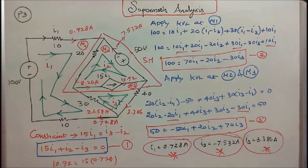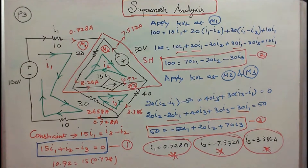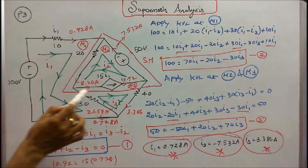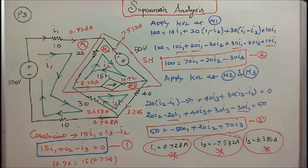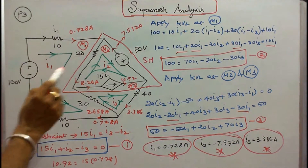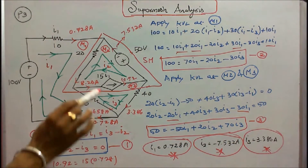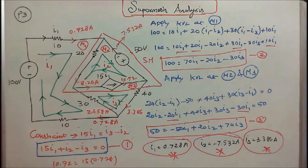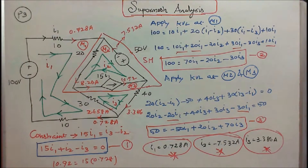Problem number 3: five resistors — 10 ohm, 20 ohm, 30 ohm, 40 ohm, and 10 ohm — two voltage sources of 50 volts and 100 volts, and one current-dependent current source of 15 I1, are connected as shown in the figure. The question is: find mesh currents I1, I2, and I3. Since the dependent current source is connected between M2 and M3, I consider this a super mesh. The constraint is 15 I1 equals I3 minus I2, rewritten as 15 I1 plus I2 minus I3 equals 0. This is equation 1.